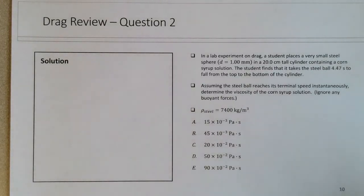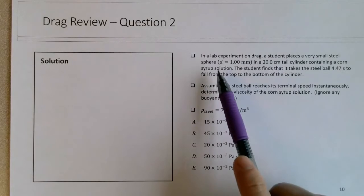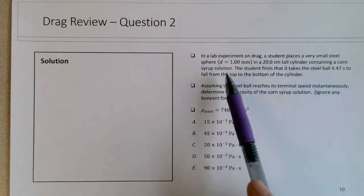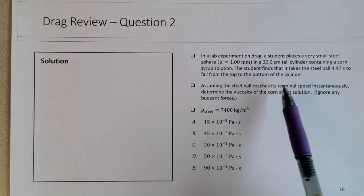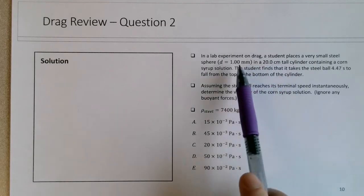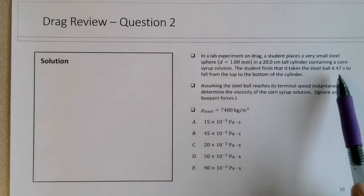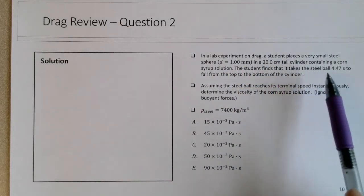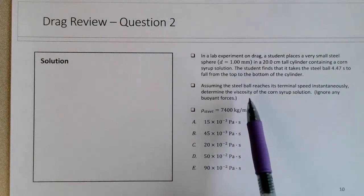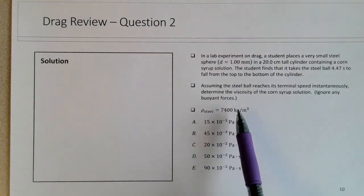So in this drag review, the second question, we're looking at a very small steel sphere, like a ball bearing, moving in a cylinder of corn syrup. It takes the ball about 4.5 seconds to travel 20 centimeters, so it's a very small object moving quite slowly. We are assuming that the ball reaches its terminal speed instantaneously, so these are all cues that this is a low Reynolds number drag question.